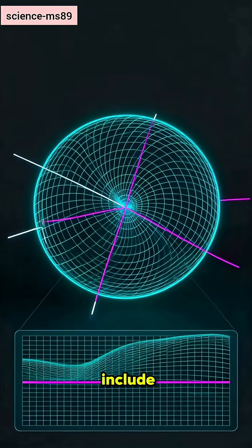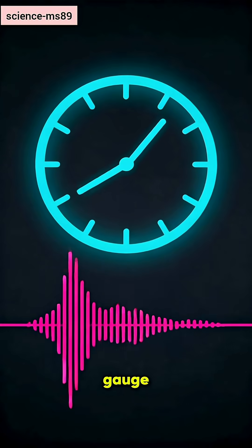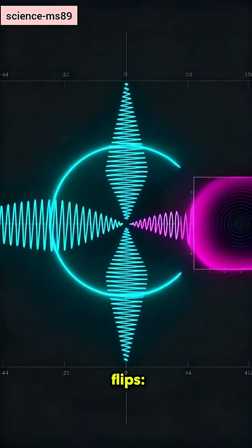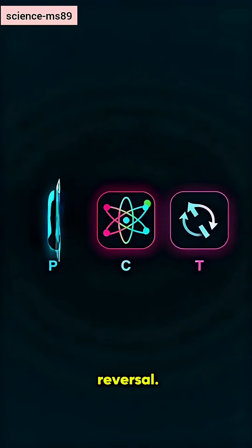Quantum symmetries include spatial rotations and translations, time shifts, gauge phases, and discrete flips. Parity, charge conjugation, and time reversal.